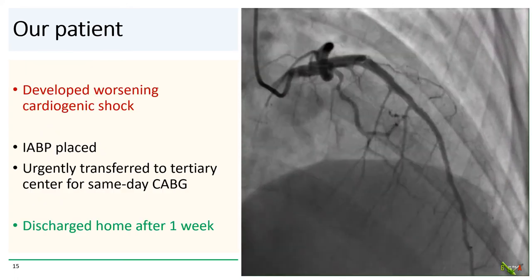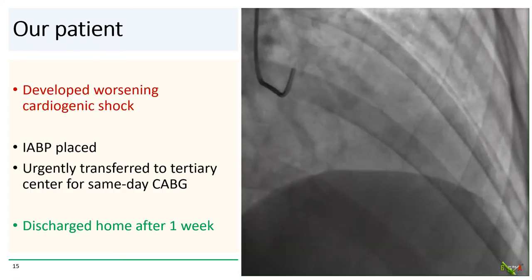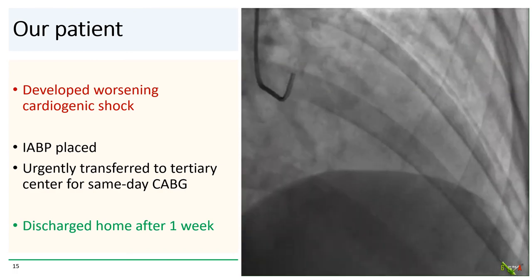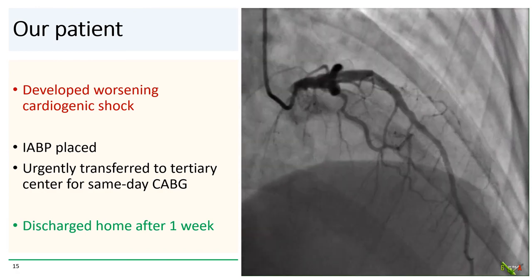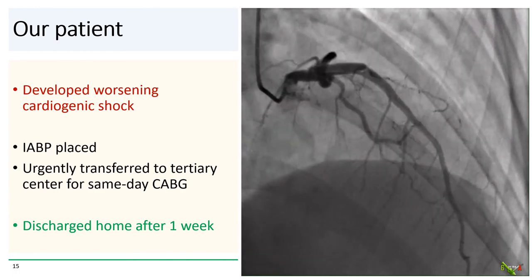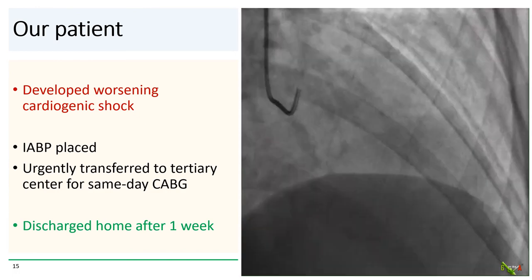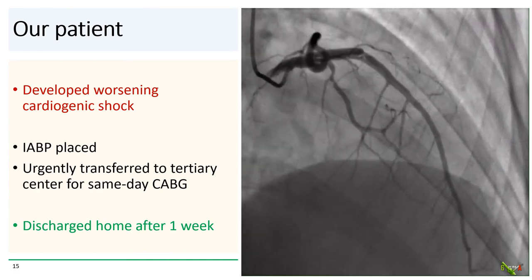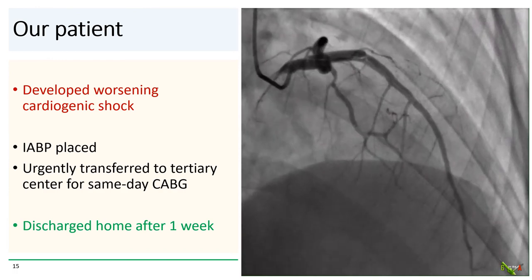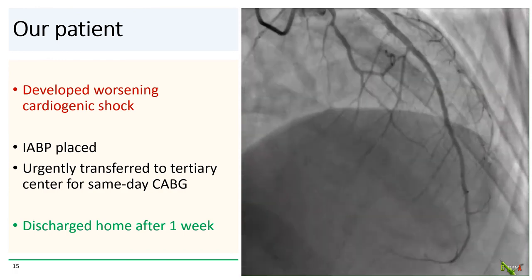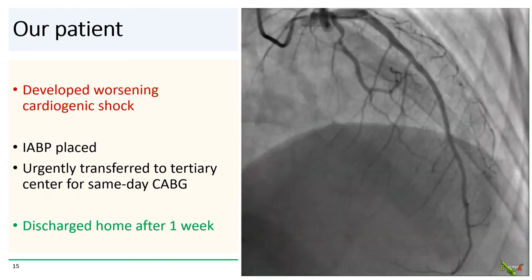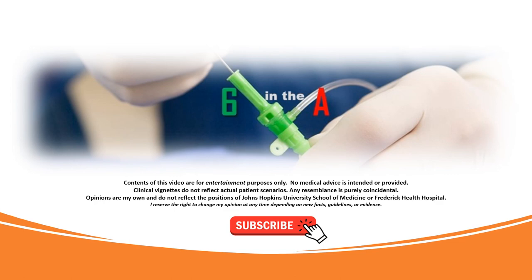So how did our patient do? She unfortunately developed progressive cardiogenic shock even as her case progressed. A balloon pump was placed to support her, but this facility did not have access to Impella. She was urgently airlifted to a tertiary center, where she underwent CABG later that day. She ended up doing relatively well and was discharged home about a week later. A pre-discharge echo showed that her EF had fully recovered. Thank you for watching.